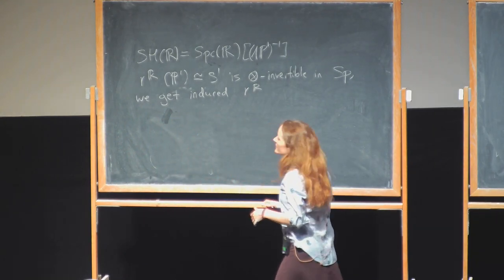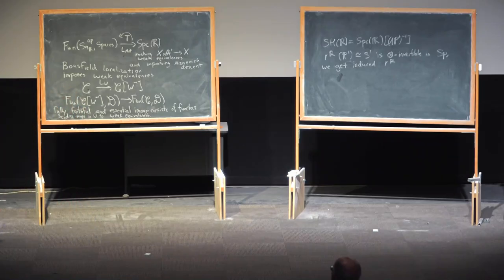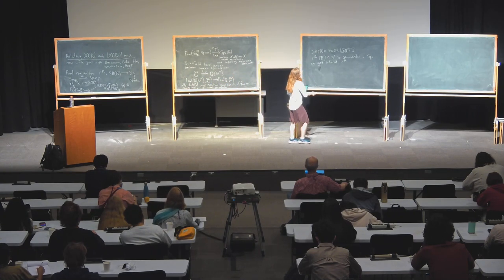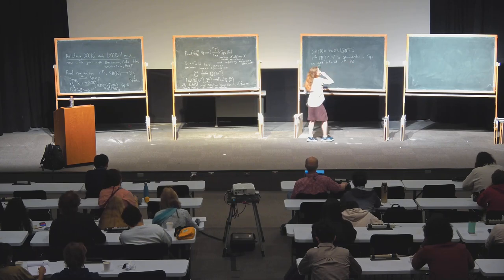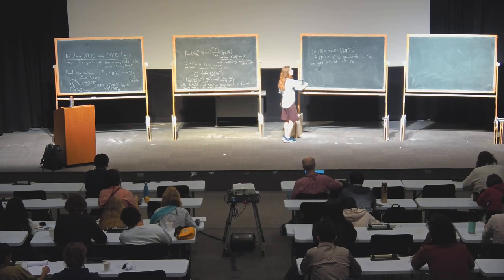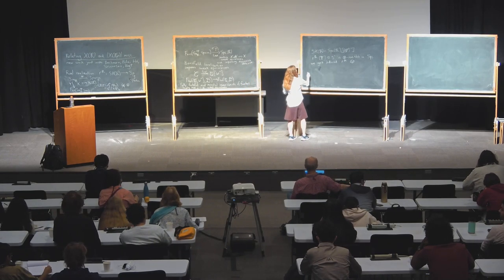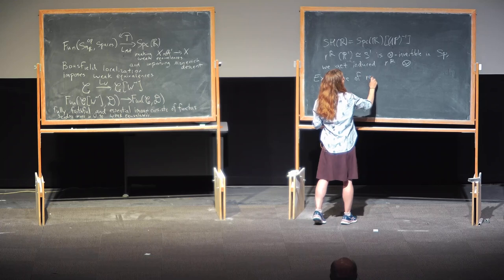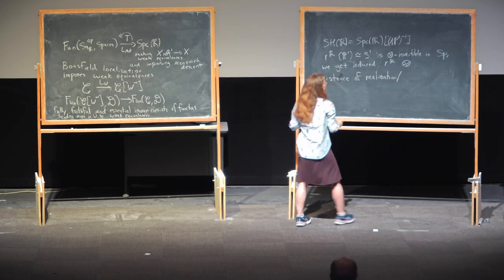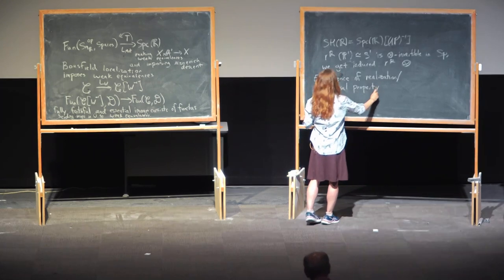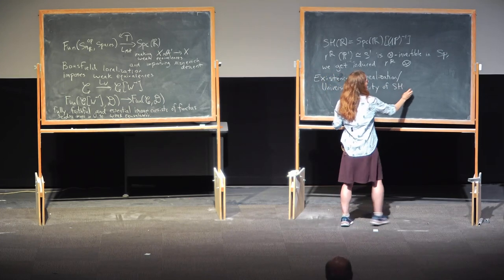We'd like to say these are all symmetric monoidal. Going from the Morel-Voevodsky A1 homotopy theory to SH was making tensoring with P1 invertible. So this was spaces over R, and then instead of making more weak equivalences, making smash with P1 an equivalence. Then we get a real realization functor. Rr of P1 wedge S1 is tensor invertible in spectra.